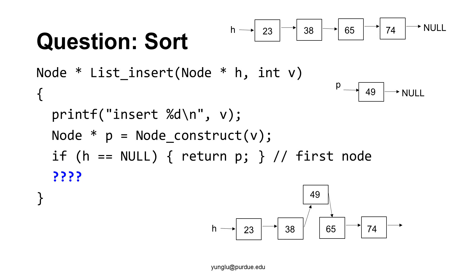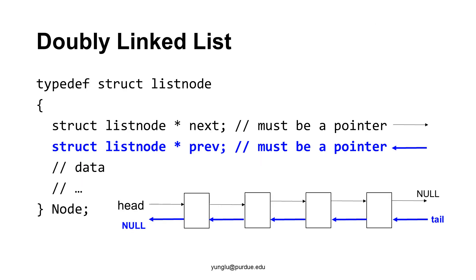Next, we will cover a new topic called doubly linked list. The linked list we talked about so far has only one link per node. The link points to the next node. In a doubly linked list, each node has two links, next and previous. The nodes are organized in this way.